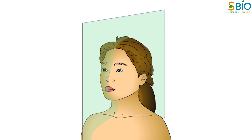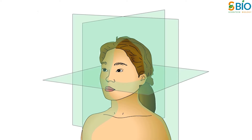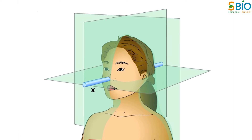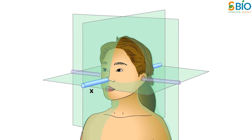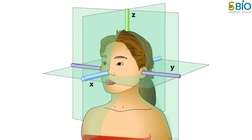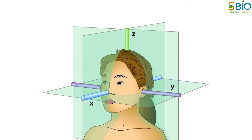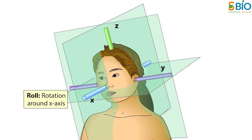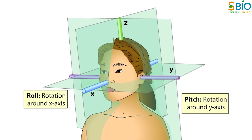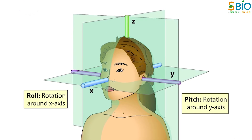All bodies moving in three dimensions have six degrees of freedom. Three of these are translational and three are rotational. The translational components may be given in terms of movement along the X, Y and Z axis of the head. Rotation about the X, Y and Z axis are commonly referred to as roll, pitch and yaw.